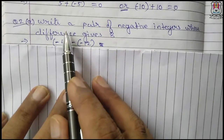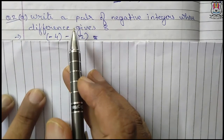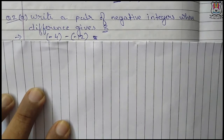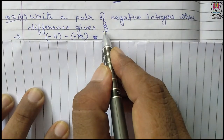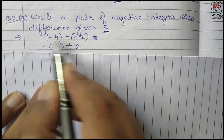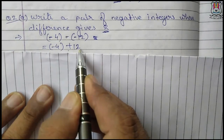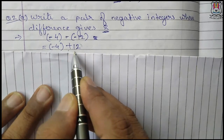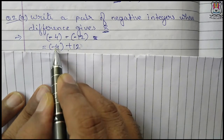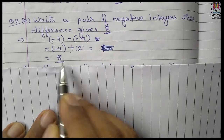Question number 2: write a pair of negative integers whose difference gives the answer as 8. We have to write two negative integers to get a positive 8. The example is minus 4 minus minus 12. This minus minus becomes plus, so minus 4 plus 12. The positive integer 12 is bigger, so 12 minus 4 is 8 — we got the answer as 8.